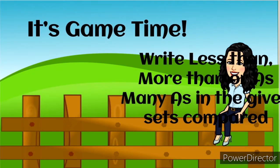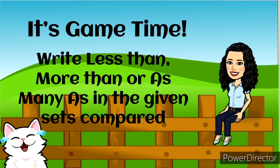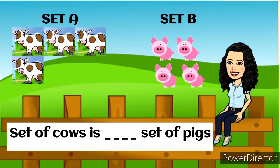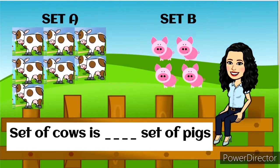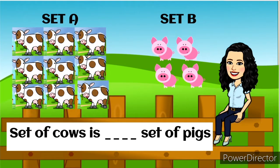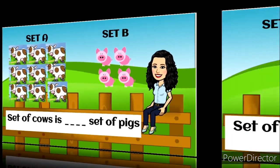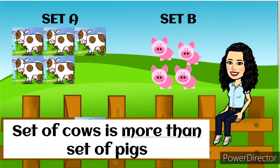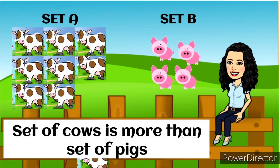It's game time! You are going to write less than, more than, or as many as in the given sets compared. Take note, you should count. Set of cows is blank set of pigs. What do you think is the correct answer? The answer is set of cows is more than set of pigs. Why? Because we have nine cows in set A and in set B we have four pigs.